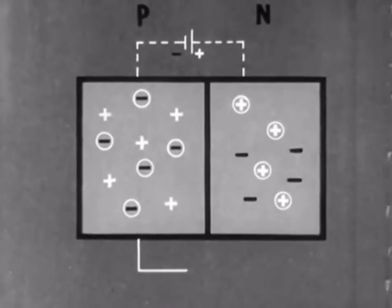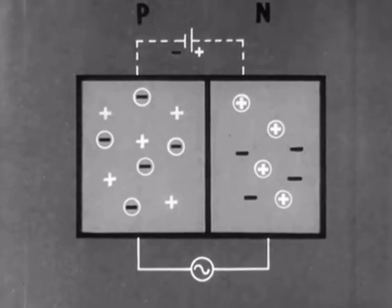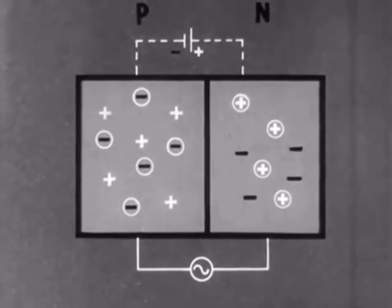If we apply an alternating voltage, current will only flow in one direction. In other words, we can rectify alternating current.